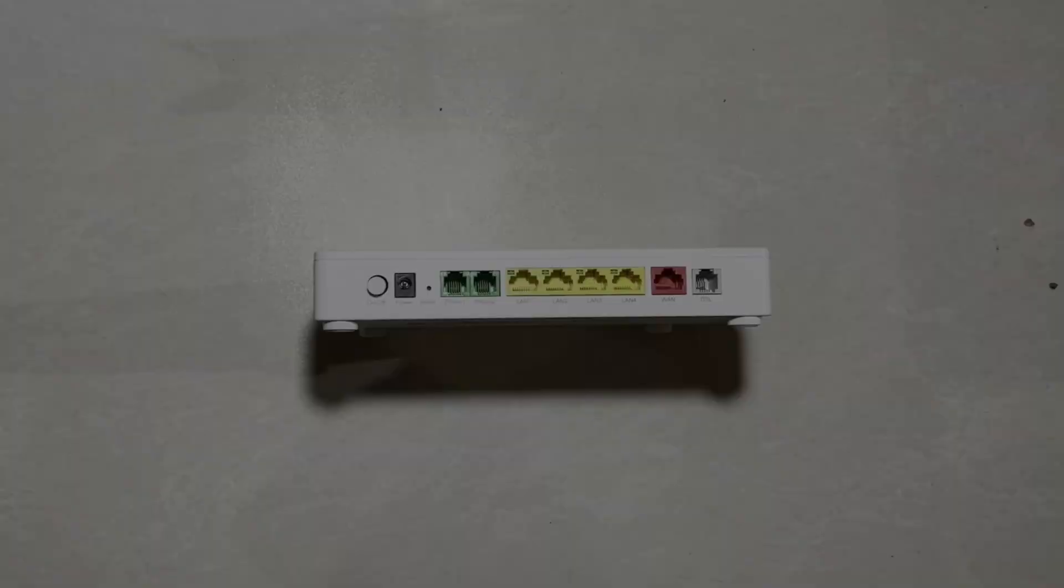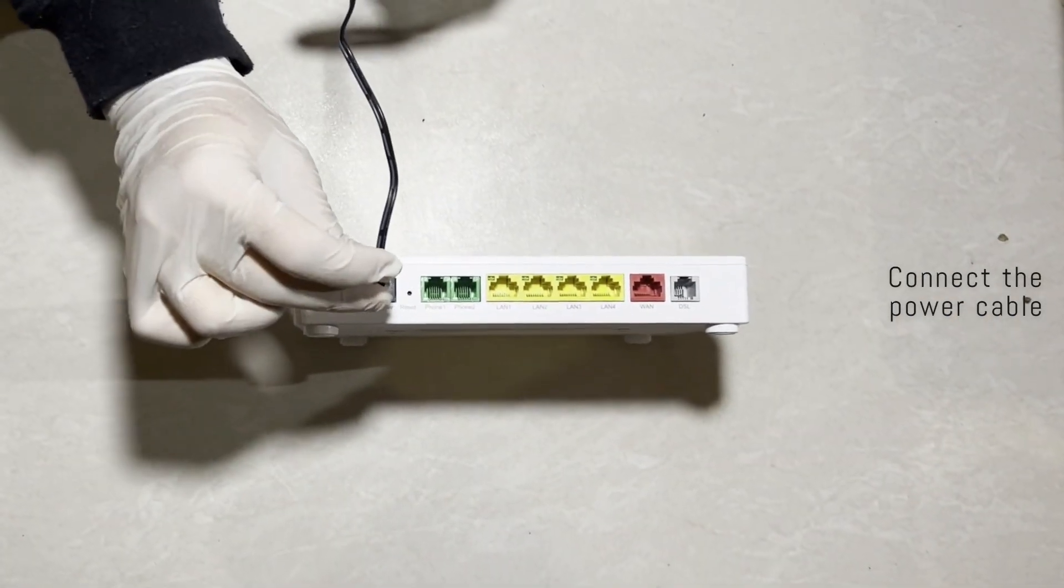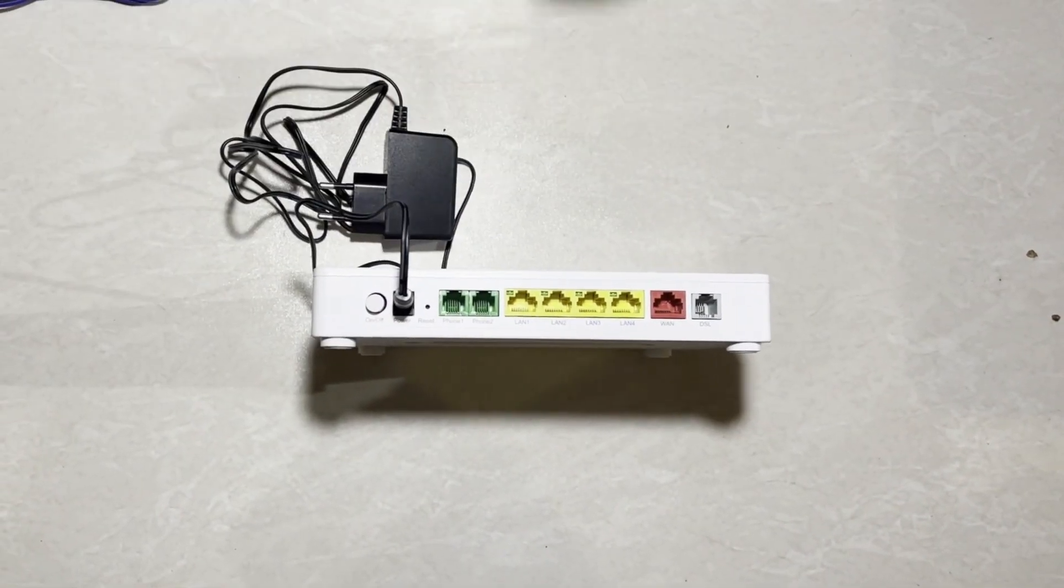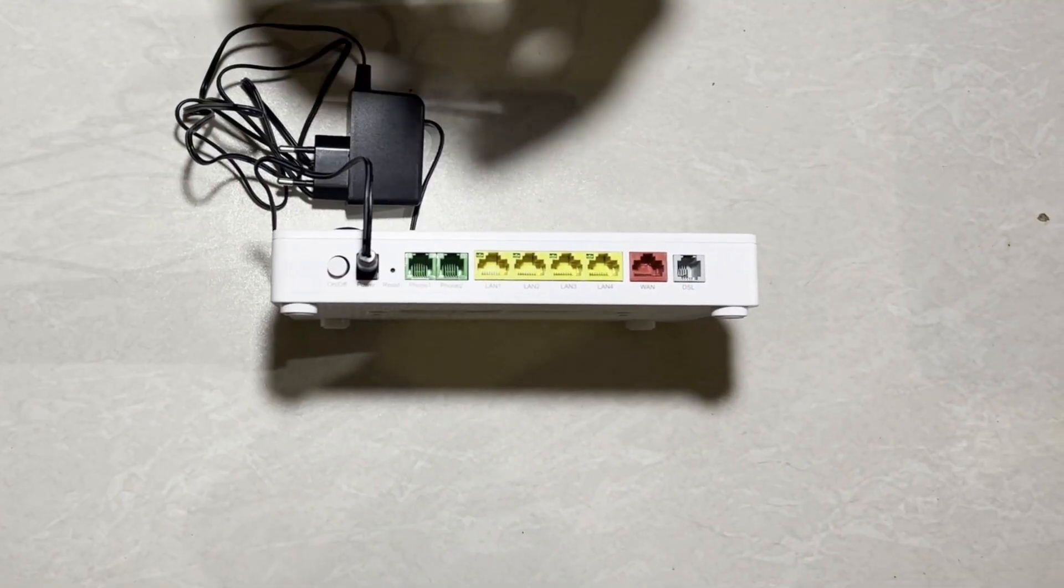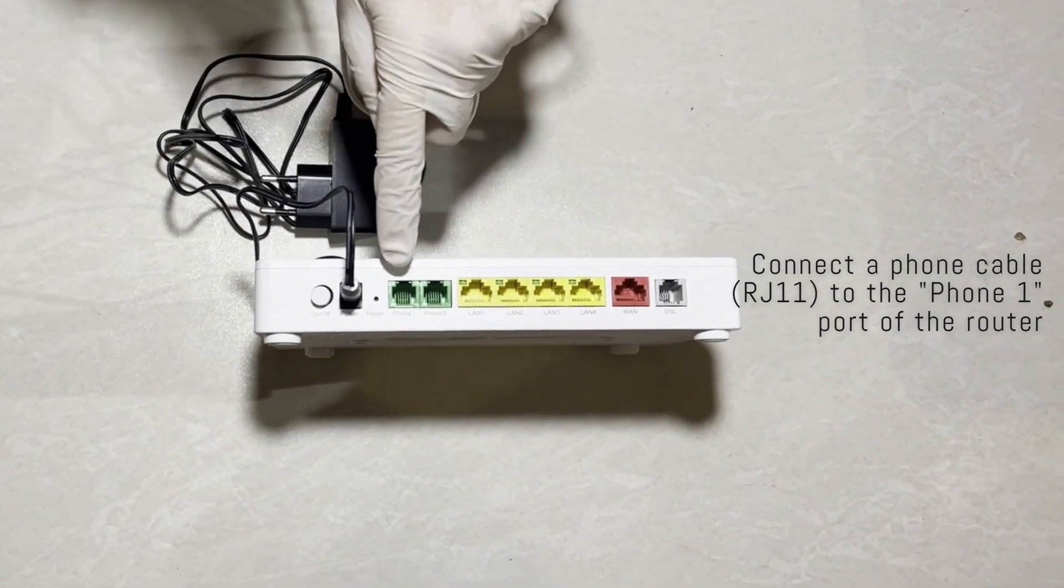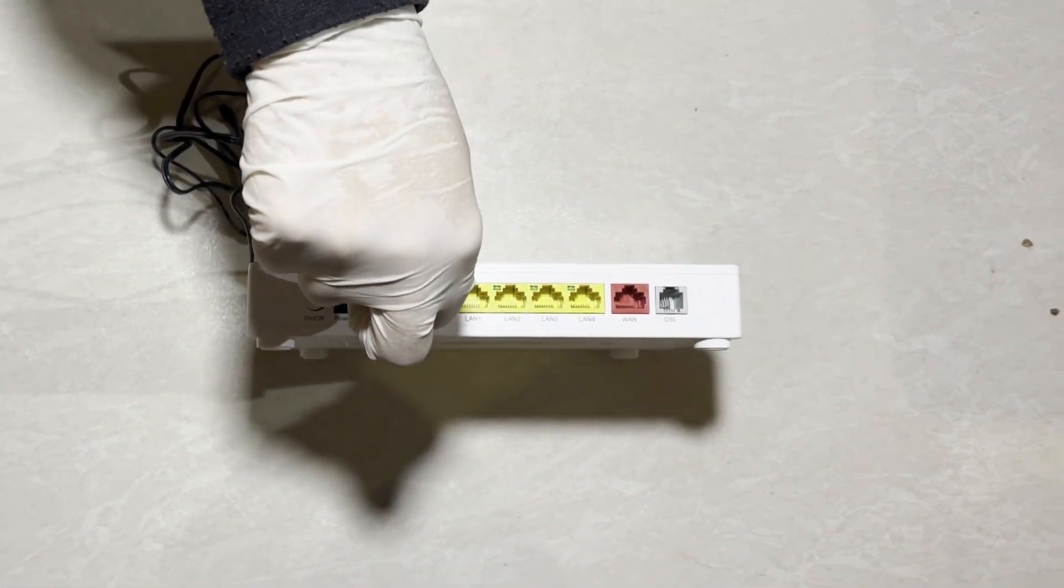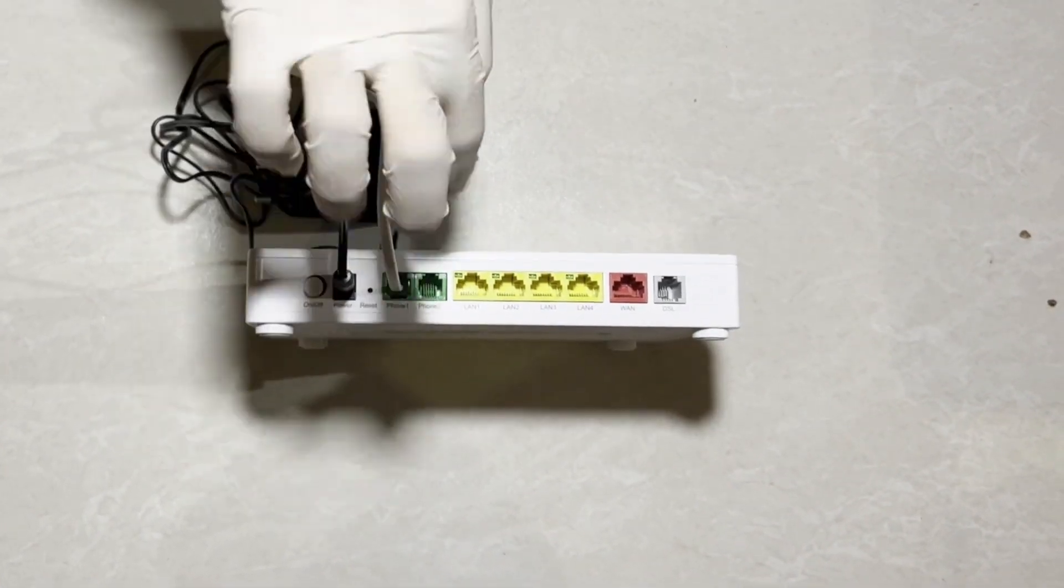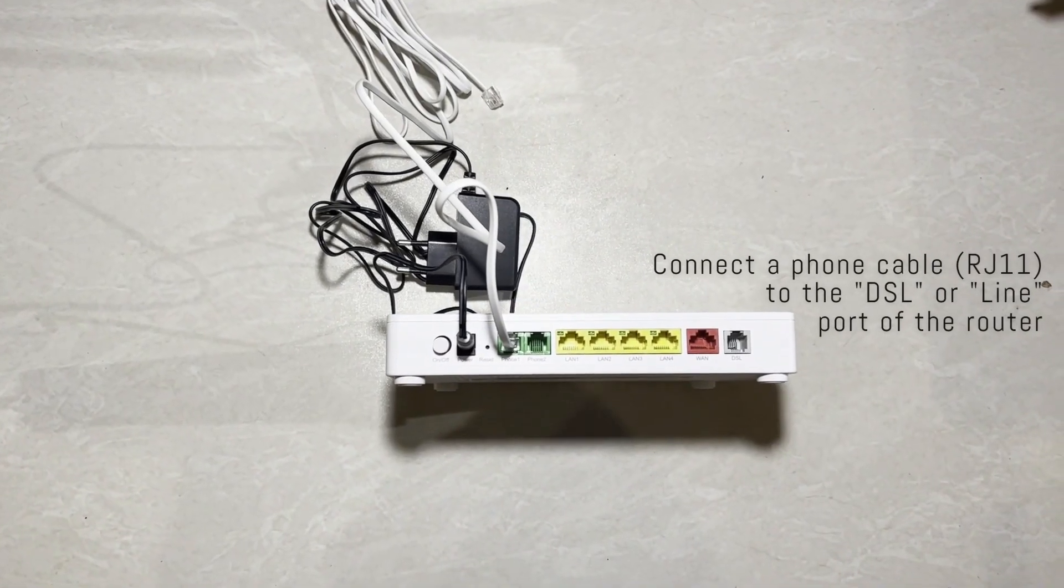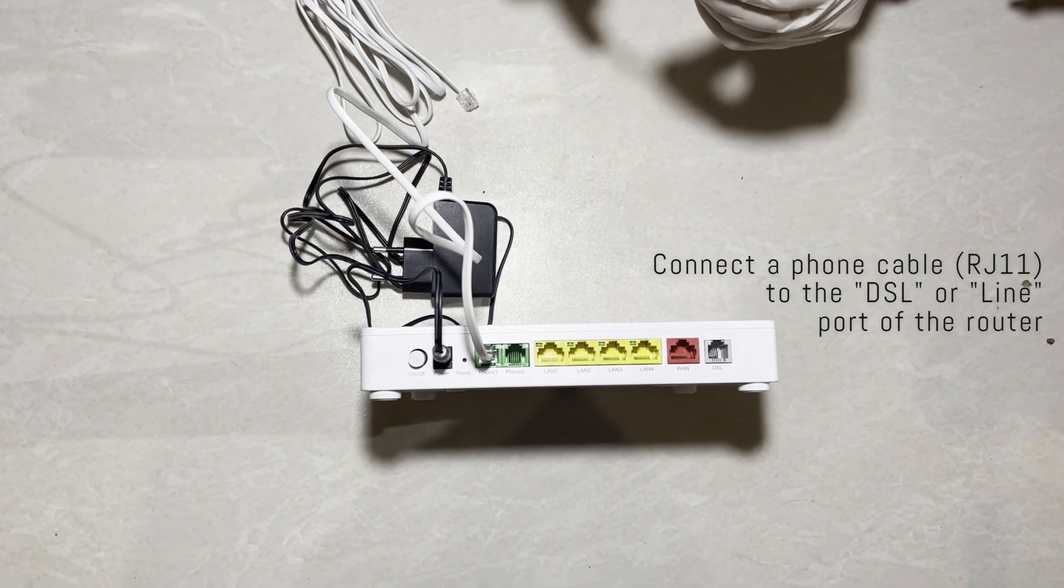This is a VDSL router. First of all, let's connect the power cable. Next, connect a phone cable type RJ11 to the phone line port of the router. Connect one more phone cable of the same type to the DSL or line port of the router.